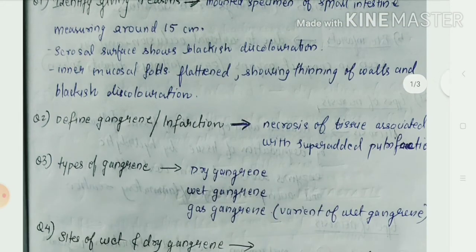The color may not always be blackish — it can look brownish. Now, the definition of gangrene: as all of you know, gangrene is necrosis of the tissue associated with superadded putrefaction.